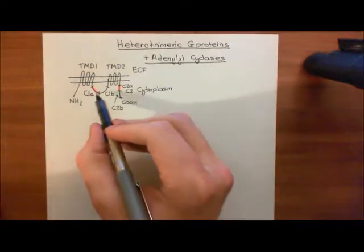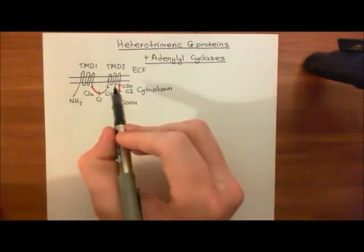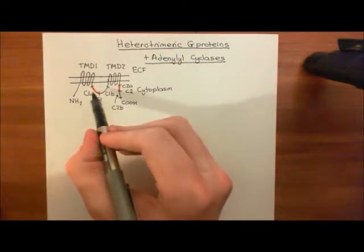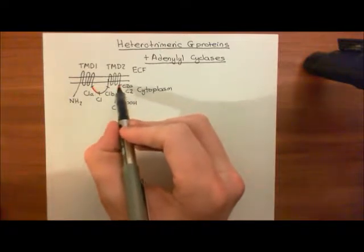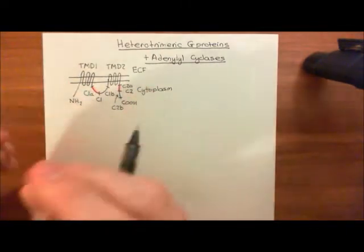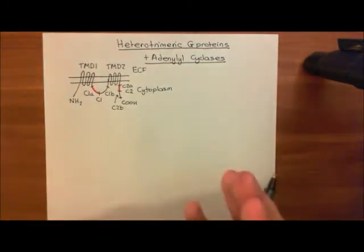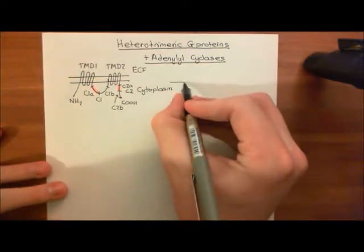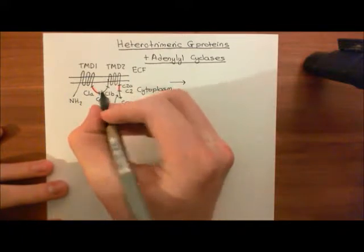You might think there are two active enzymes, but no. What has to happen is the C1A domain has to dimerize with C2A — both have to come together and bind — and then that bound C1A and C2A will be an active adenylyl cyclase enzyme. What I've drawn so far is actually the inactive enzyme.